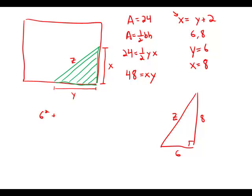Well, 36 plus 64 must equal z squared. 36 plus 64 is 100, and if z squared equals 100, that means that z equals 10. And this is answer choice E.